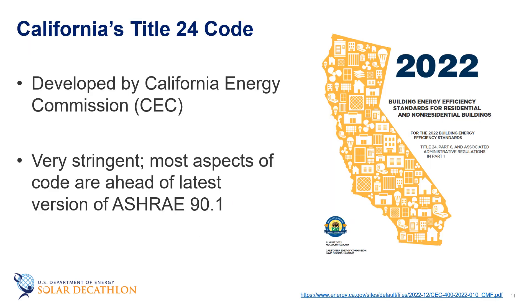California has adopted their own set of rules called Title 24. This code is very stringent in terms of energy efficiency, but again, a building built to just meet Title 24 is the worst building you can legally build in California. Often, to get to zero you will need more energy efficiency strategies.